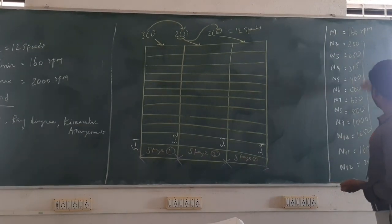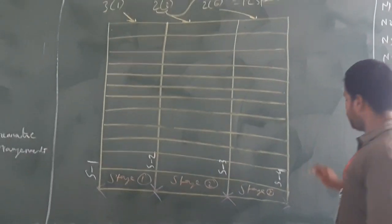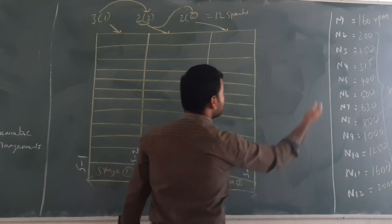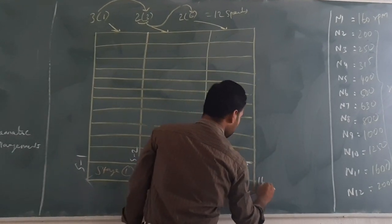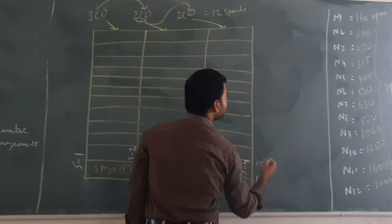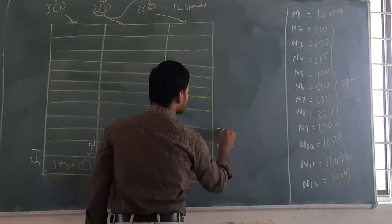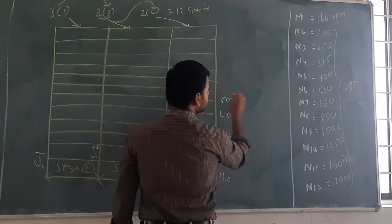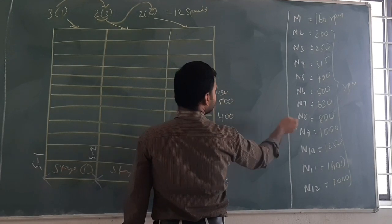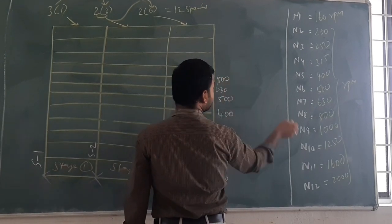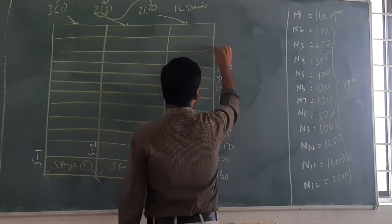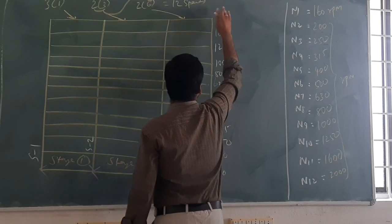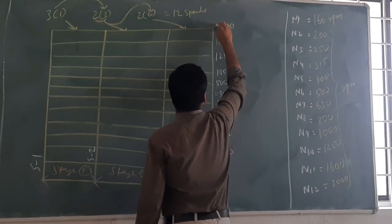Now we plot the 12 speed values along the vertical lines from minimum to maximum: 160, 200, 250, 315, 400, 500, 630, 800, 1000, 1250, 1600, 2000. These are marked from n1 up to n12 on the diagram.